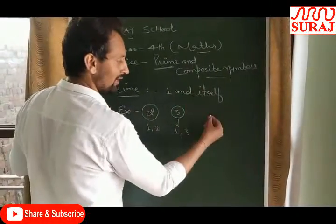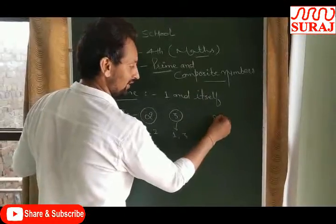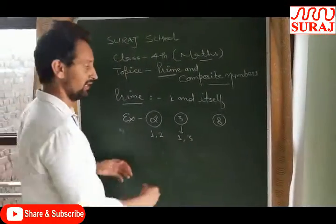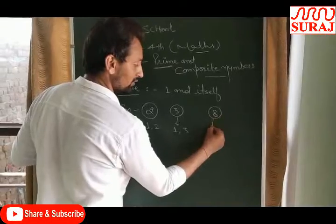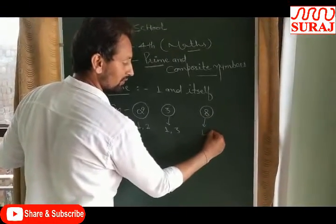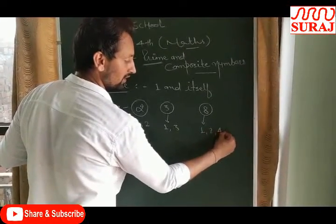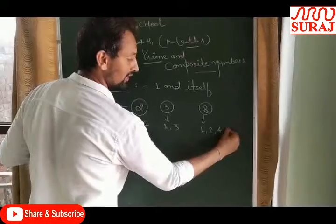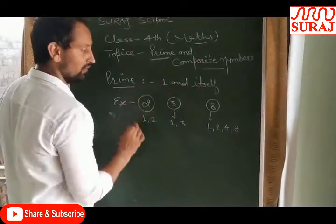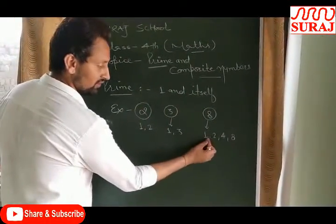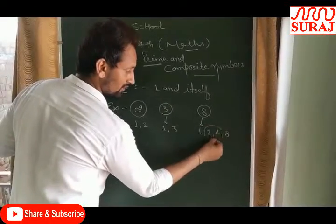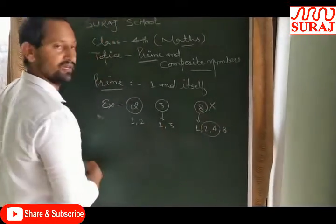For example, I have written 8. Now you see, if we divide 8, we can divide it by one, two, four, and eight — more than two numbers divide it. So this is not a prime number.